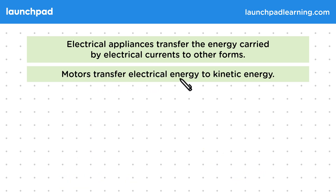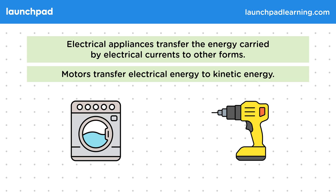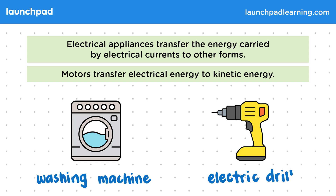Motors transfer electrical energy into kinetic energy. A good example of this is a washing machine, which uses energy from the mains to spin a drum and pump water. An electric drill uses energy from a battery, transferred to kinetic energy supplied to the motor, allowing the drill bit to spin. Other good examples include cars or home appliances like blenders.